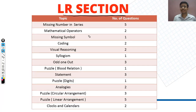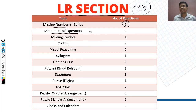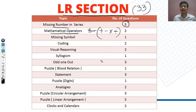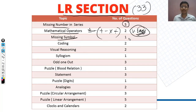Now let's talk about the LR section. In LR, there were 33 questions. Missing number in series — 5 questions. Mathematical operators — you had to replace plus, minus, multiply, and divide, or change the sign and interchange the equation. These 2 questions were doable. Missing symbol was very easy.